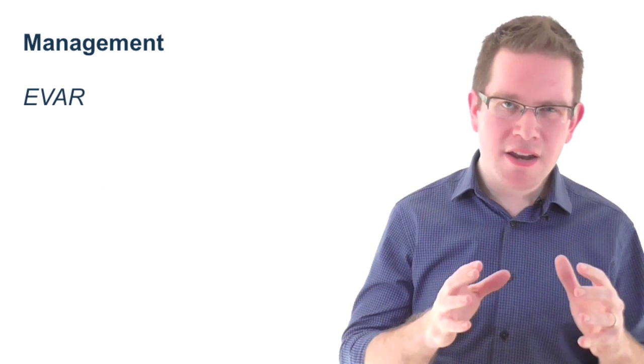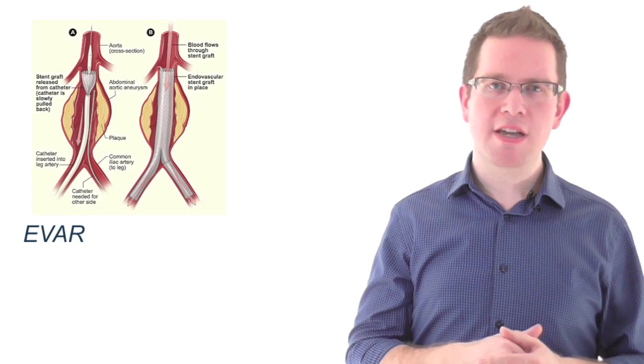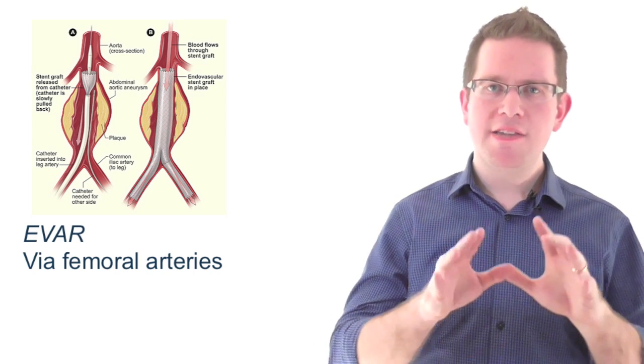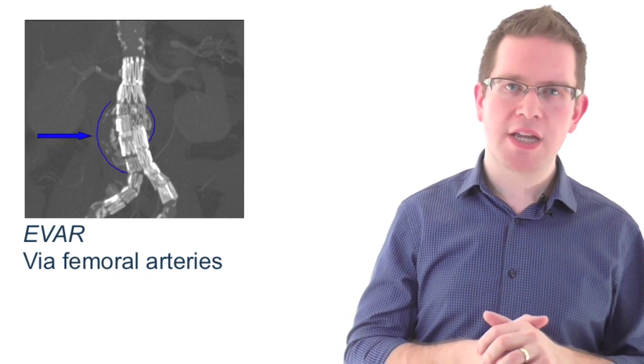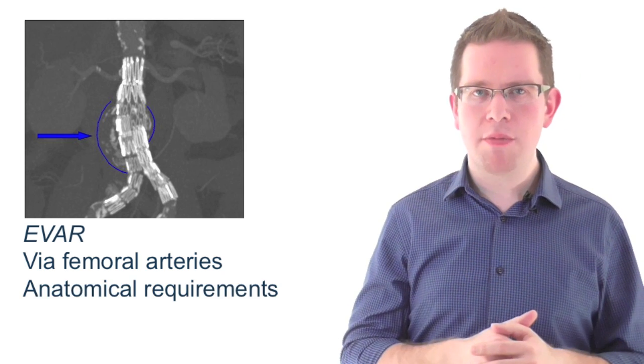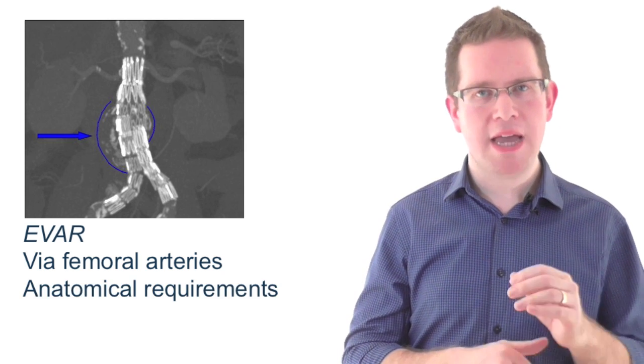EVAR, so that's endovascular aneurysm repair, involves inserting a covered stent graft via the groins through the femoral arteries. The device excludes the aneurysm from the circulation and can be performed under local anaesthesia. It requires certain anatomical criteria to be met in order to be technically possible.